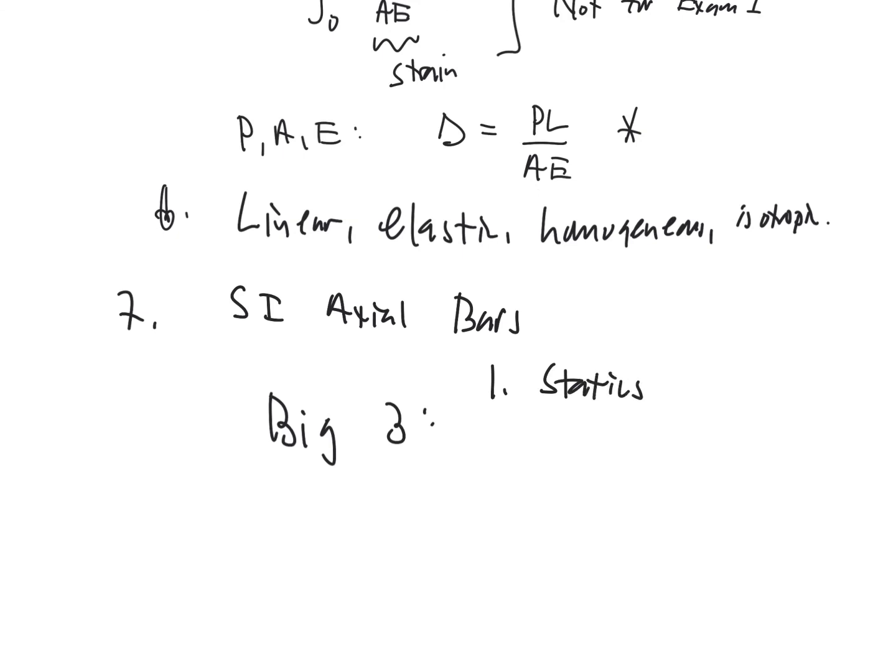That means the deformed solid has to be in equilibrium. Secondly, the stress-strain law. The axial bars inside of our system have to follow known material laws. But the way that that manifests itself is going to be delta is PL over AE. Why?